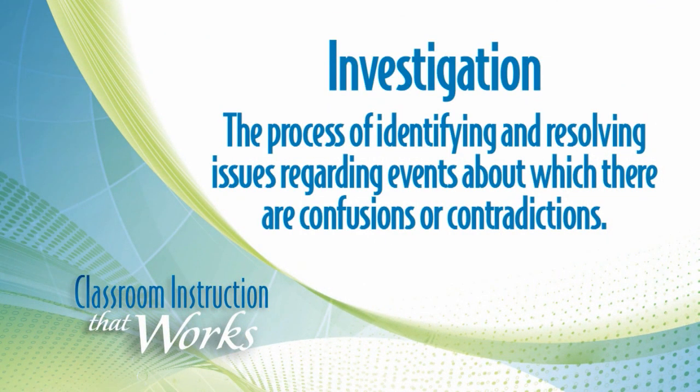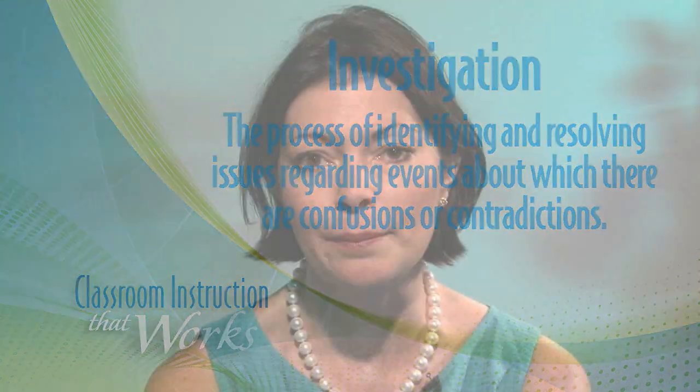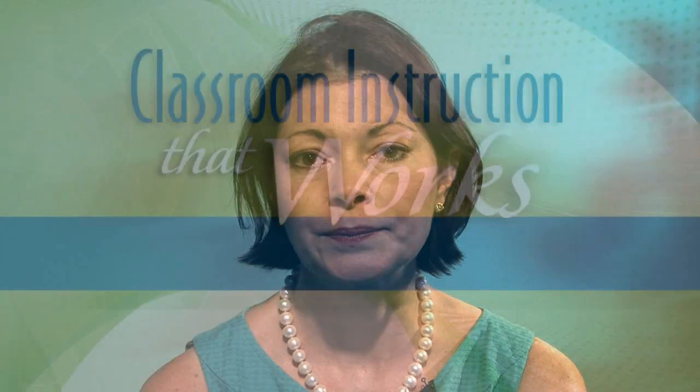A fourth and final would be having an investigation. This can be a historical investigation or one of current events. So for example, students could research the lost colony of Roanoke, Virginia, and come up with hypotheses of what happened in that colony. Or they may look at different hypotheses of John F. Kennedy's assassination, and why we have different ideas about the events that occurred on that day.